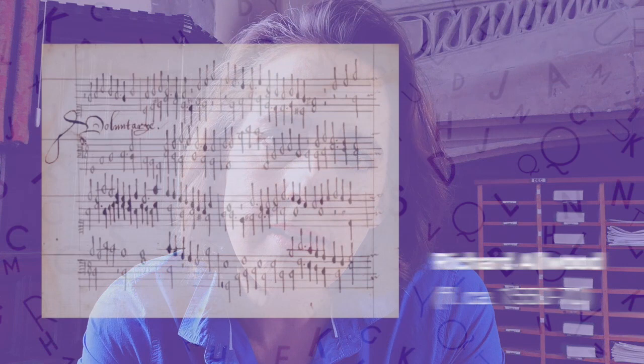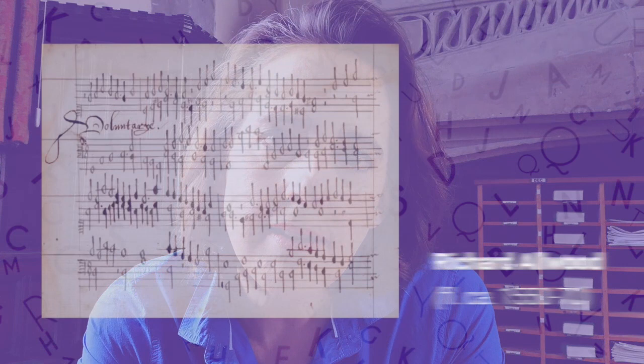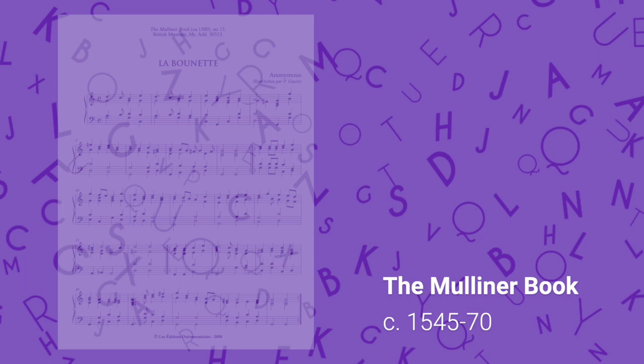It's around this time that we see the first use of the word voluntary as the title of a piece — a work by Richard Allwood found in the Mulliner book, a group of pieces most likely compiled in the early years of Elizabeth's reign, so in the late 1550s or perhaps early 1560s. Of course it's difficult to know the precise dates of composition of the works in the Mulliner book, although many of them are based on plain songs, so those at least were probably written before the Reformation.